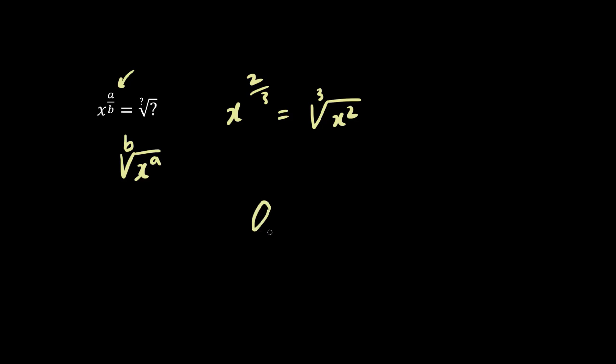Now what about a to the 5 over 2? This means the square root, the index here is 2. We don't have to write it. Of a to the 5.